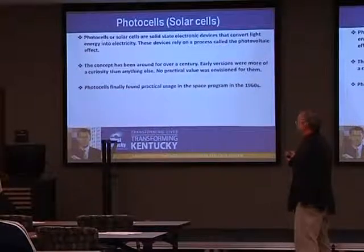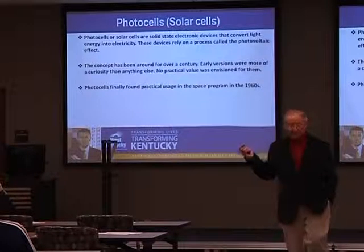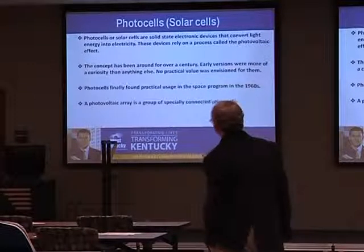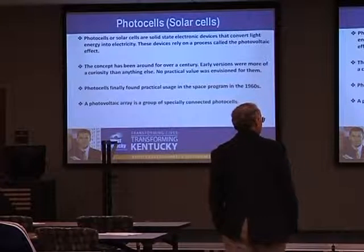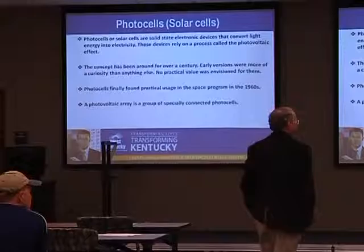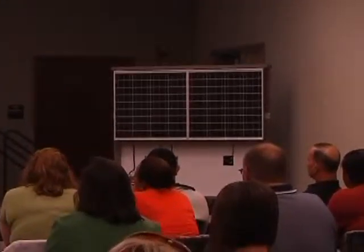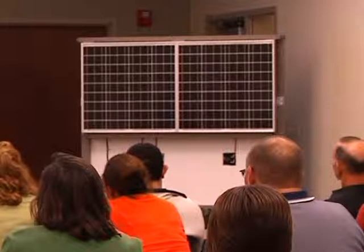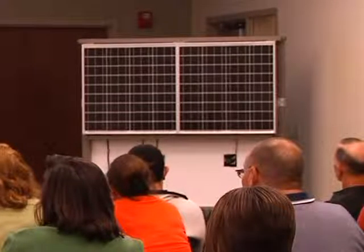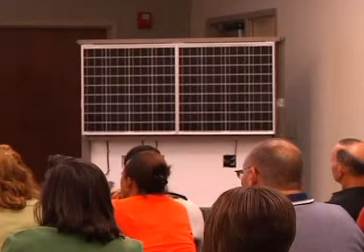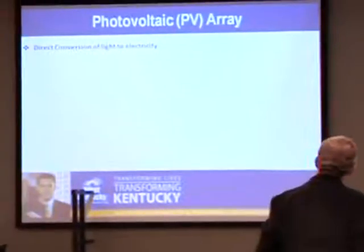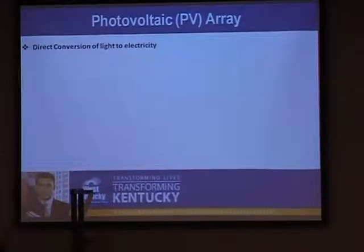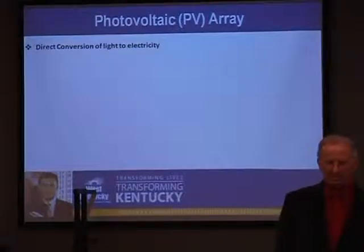Photo cells, or solar cells, can be combined into a photovoltaic array, which is a group of specially connected photo cells. Photovoltaic are usually abbreviated PV. PV arrays are a direct conversion of light to electricity. They're often categorized according to which type of semiconductor technology is being used.